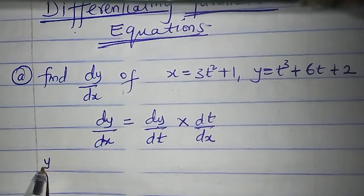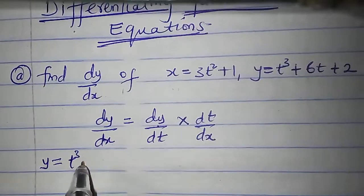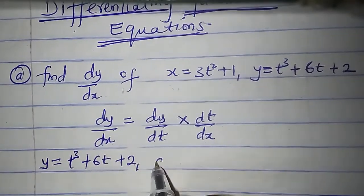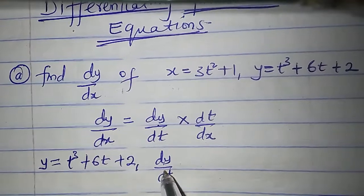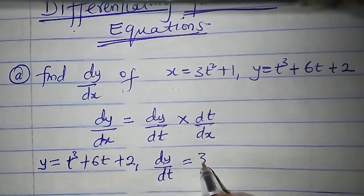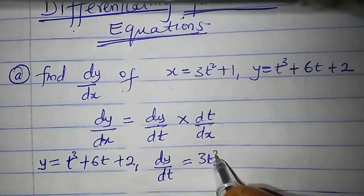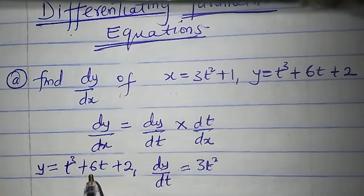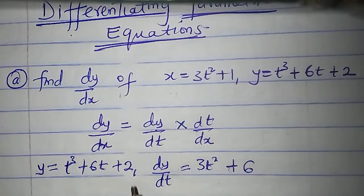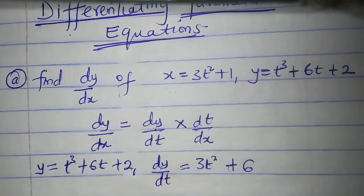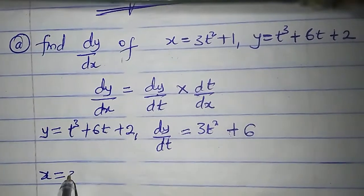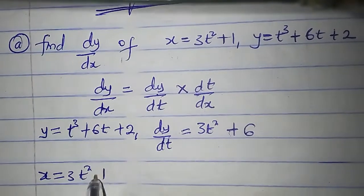y is equal to t cubed plus 6t plus 2. dy/dt: differentiate t cubed to get 3t squared, differentiate 6t to get 6, and differentiate 2 to get 0. That is dy/dt. x is equal to 3t squared plus 1.